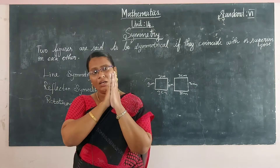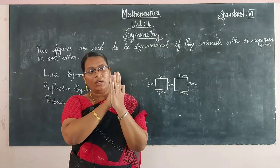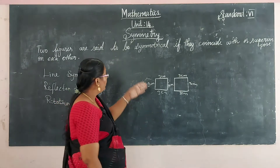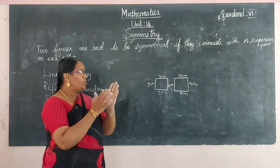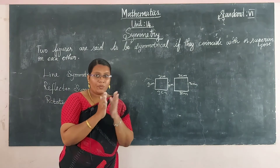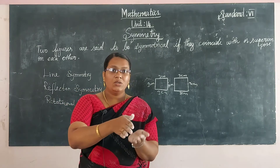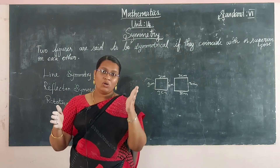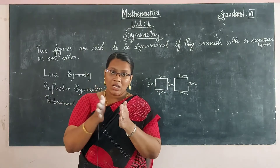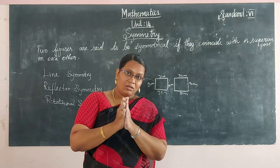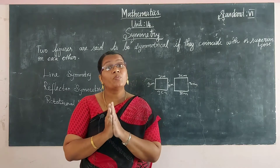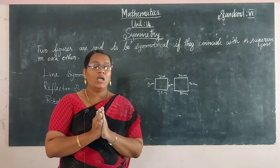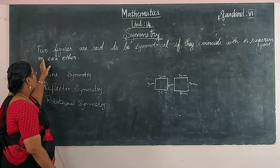In our hands, when we close our palms together, they coincide with each other — that is one example of symmetry. Superimposition means we consider two objects and one object coincides completely with the other object. That is called symmetry.